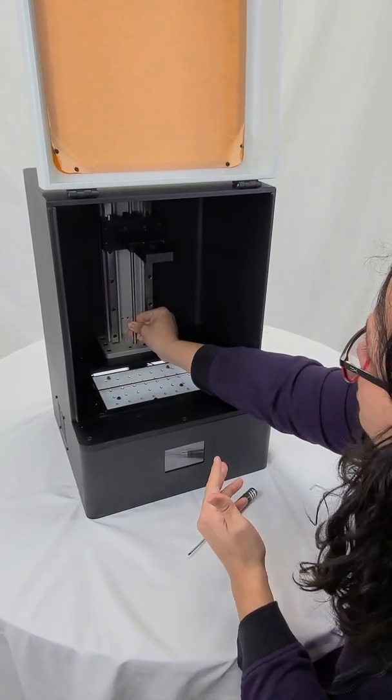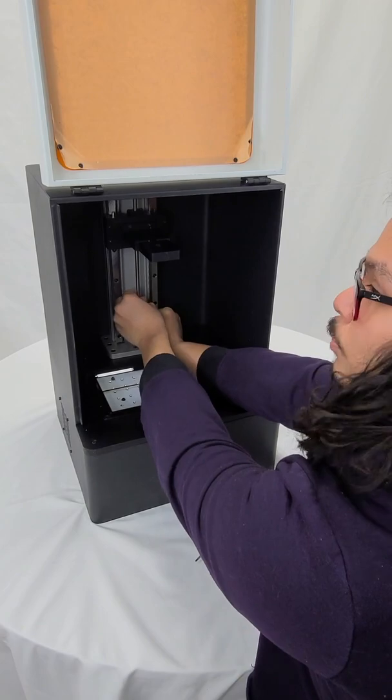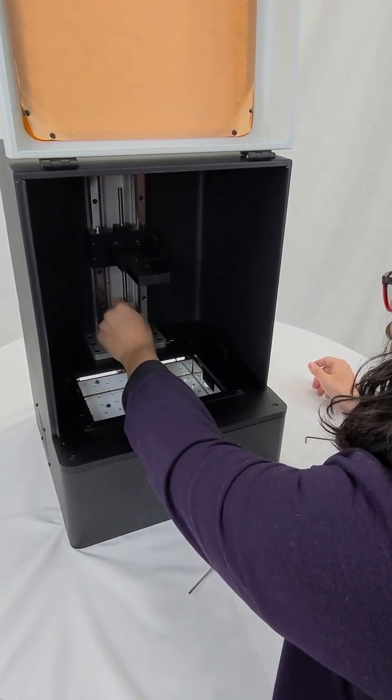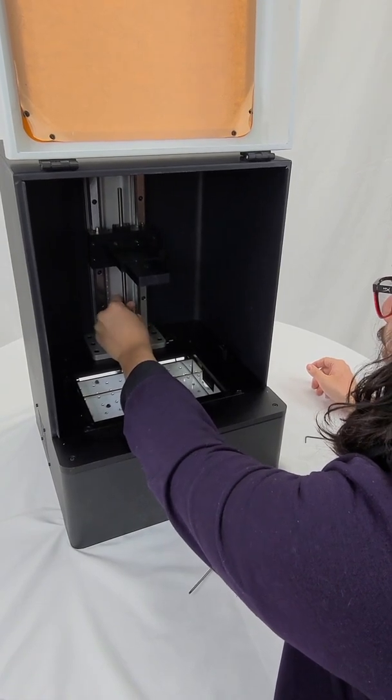Once you have all four bolts unscrewed, the arm will drop down, so make sure you're holding onto that threaded rod and letting it drop down slowly.